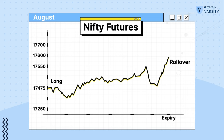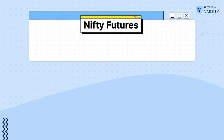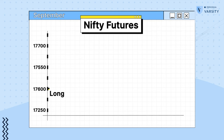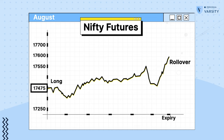Rolling over the position means I will have to close my existing contract, which is in August 2022 — the current month contract — and reinitiate the same position, that is going long on one lot of Nifty in the September contract, which is the mid-month contract. In this example, I'm long Nifty Futures, one lot, at 17,475. My target here is 17,700. Given that August expiry is close, I'm much better off rolling over my position to September by closing or squaring off my position in August and reinitiating the same for the month of September.